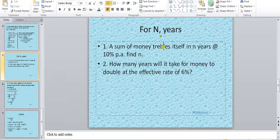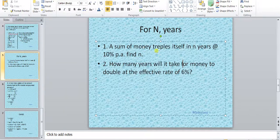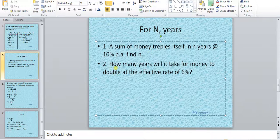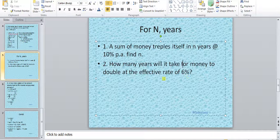A sum of money trebles itself in n years at 10% per annum. Find n, meaning in how many years it would become three times itself. The second problem: how many years will it take for money to double at the effective rate of 6%? We have not been asked to find the effective rate of interest.